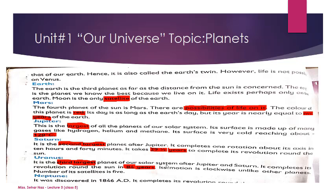Venus is also called the Earth's twin because its size, mass, weight, and density are almost equal to that of Earth. That's why it is called Earth's twin.